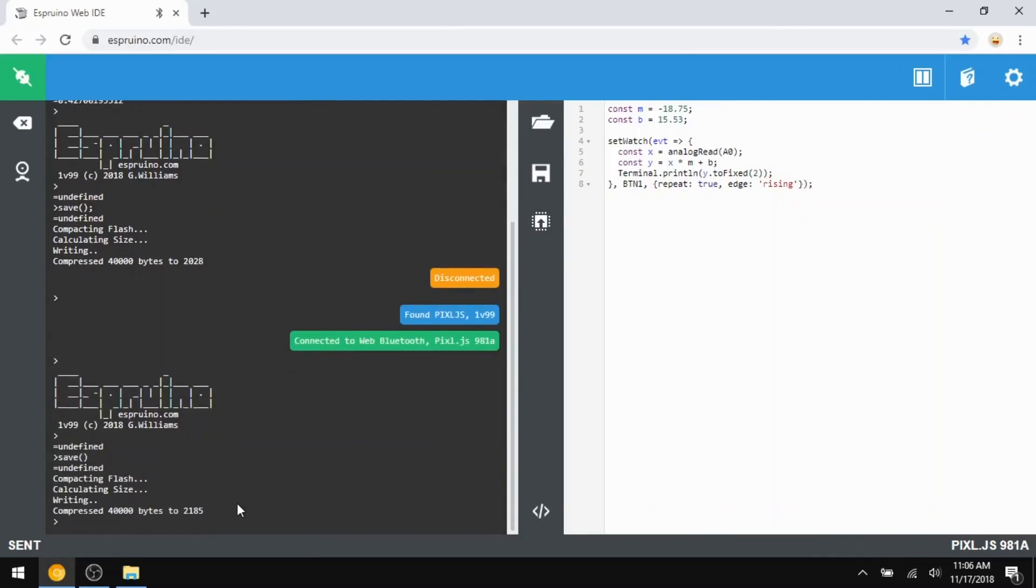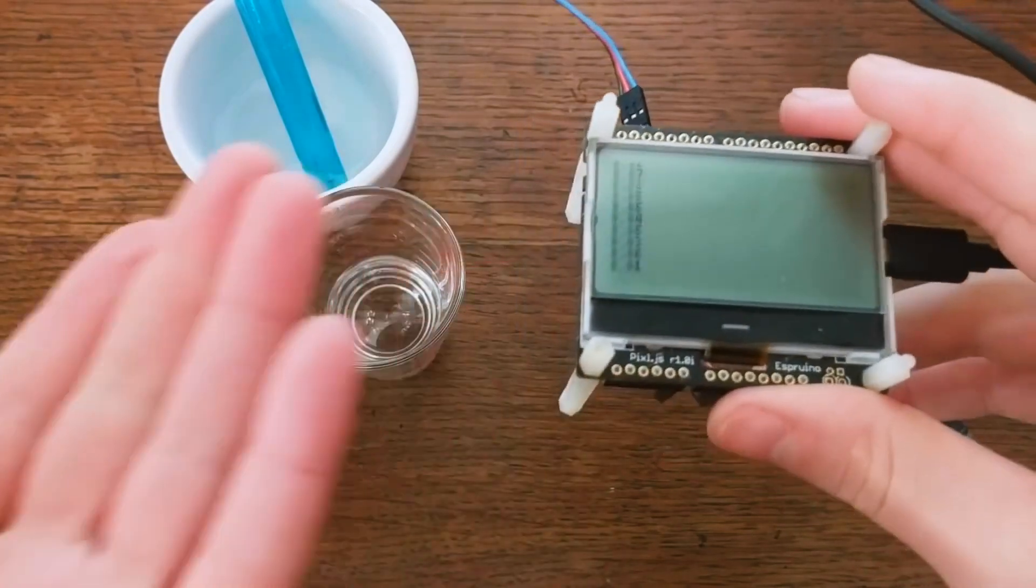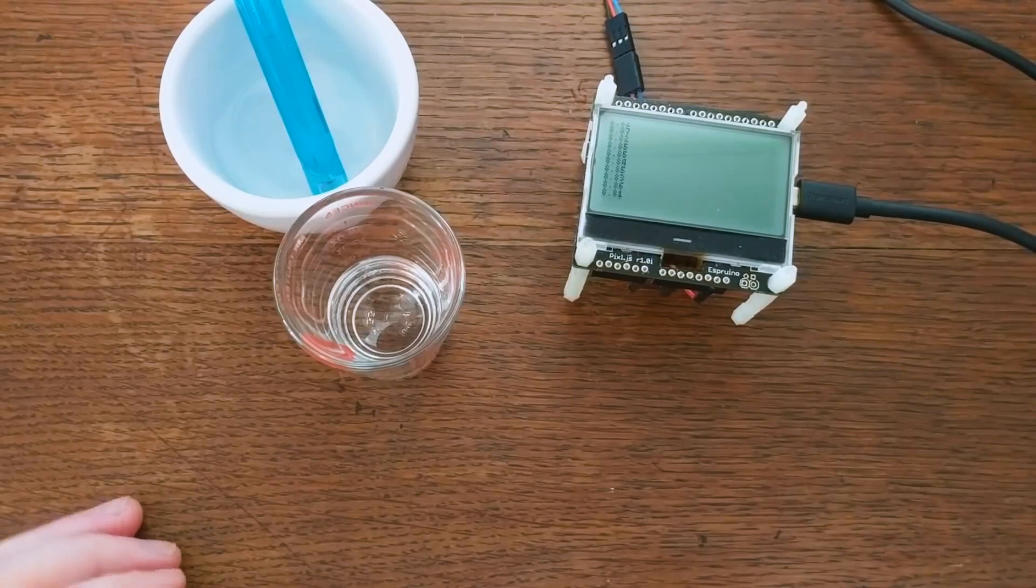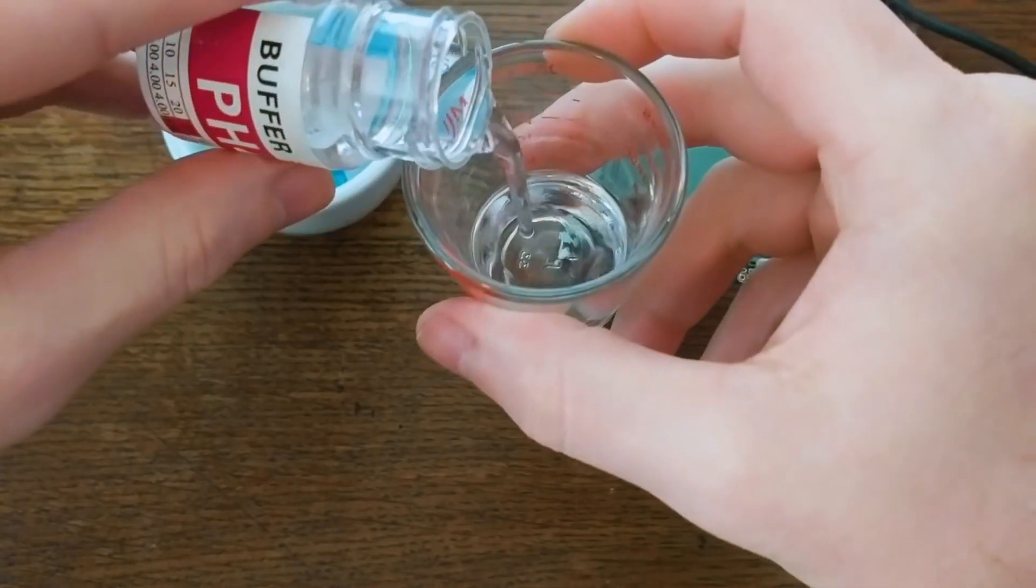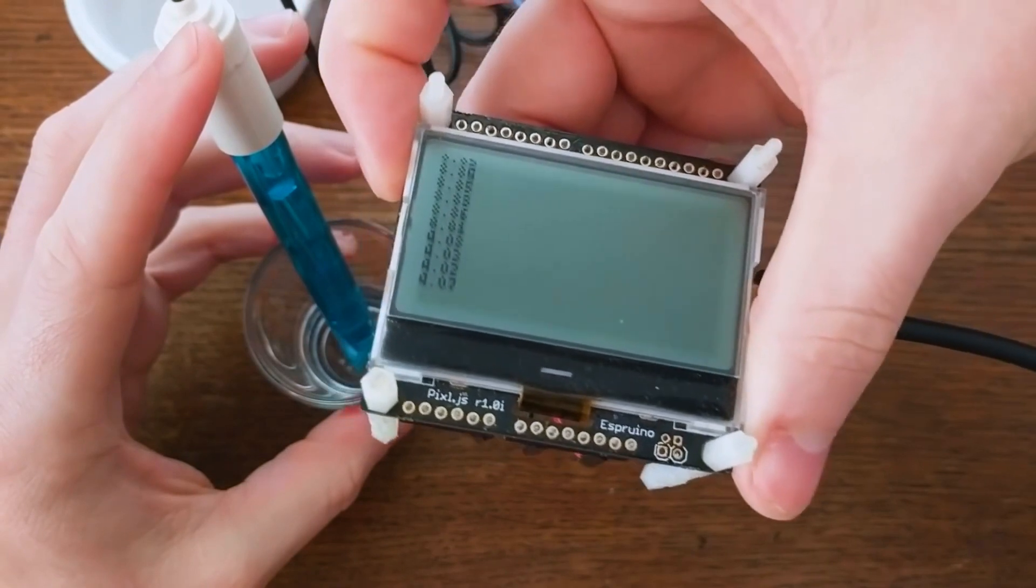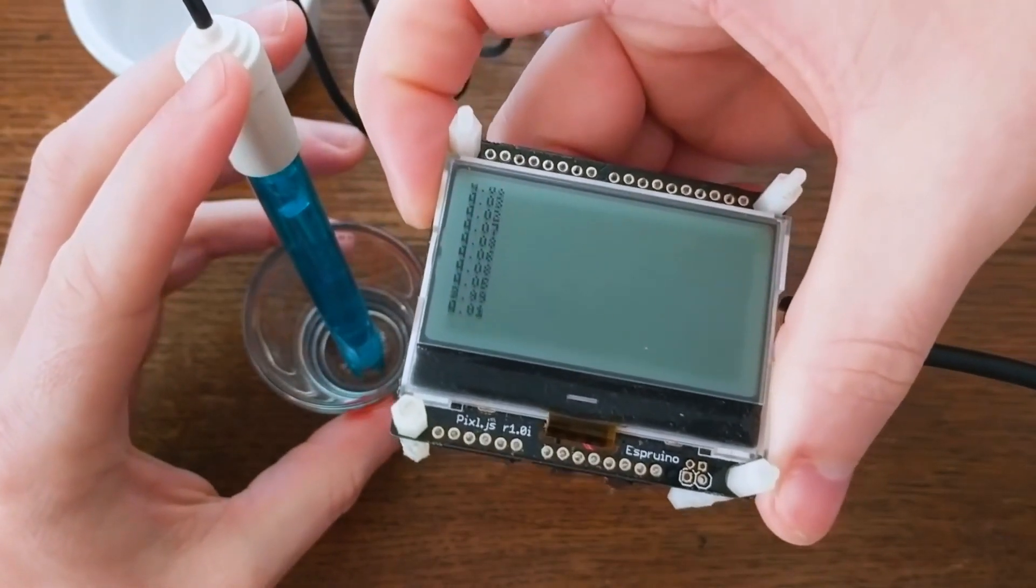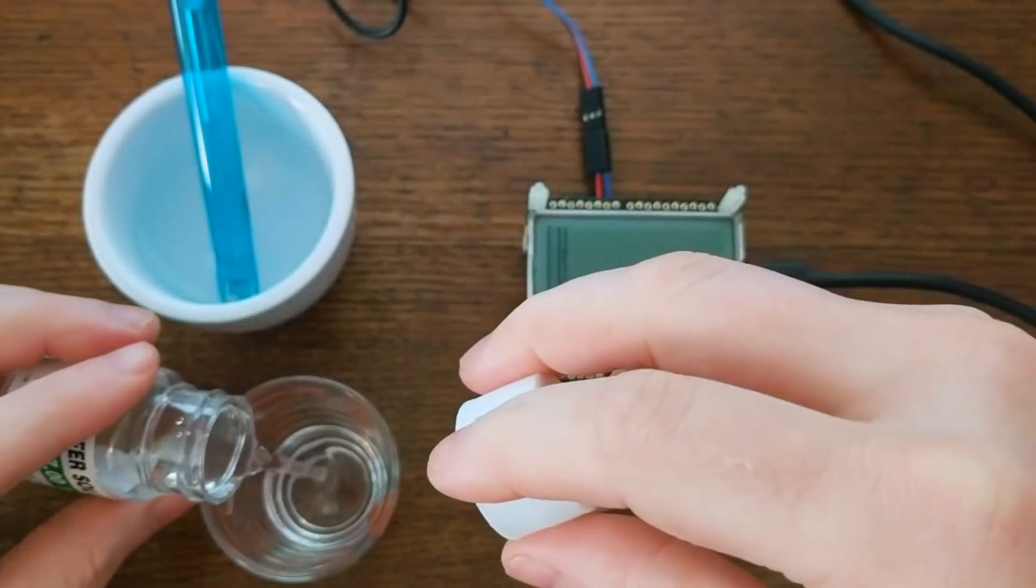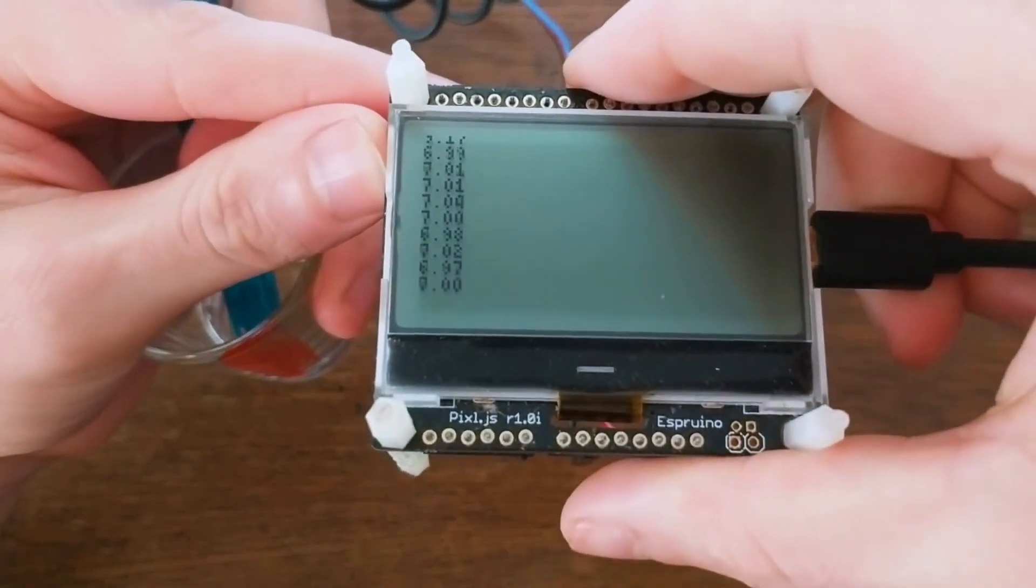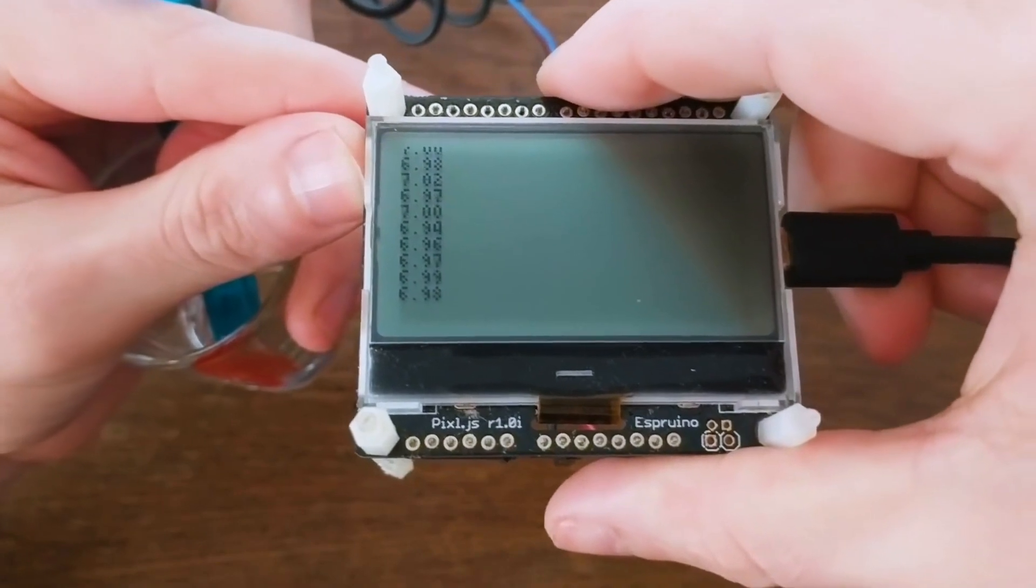And now if I take a reading of my distilled water, you can see that it's a pH of about 9. So it is slightly basic. And then if I pour out some of my pH 4 solution, you can see that it's measuring at approximately 4. Yay! That's exactly what it should be. And if I pour out a bit of my pH 7 solution, you can see that it's measuring about 7. So it appears that we have a working pH sensor with a digital display now.